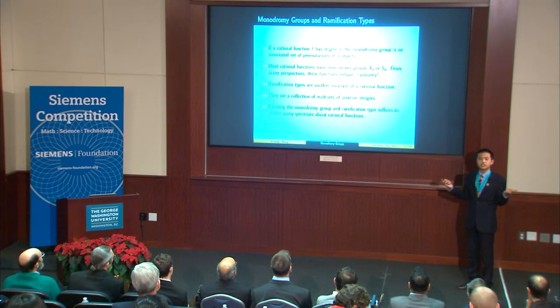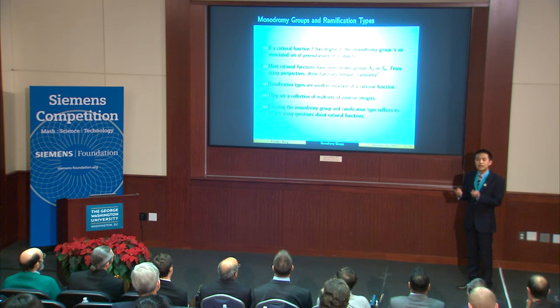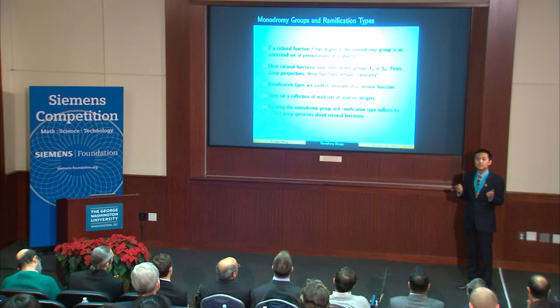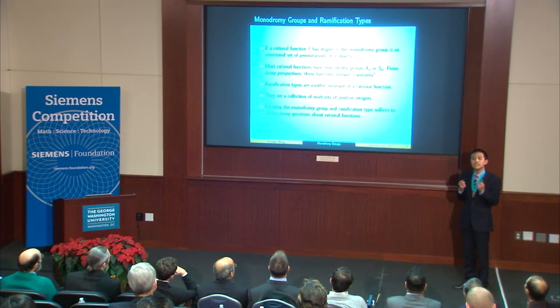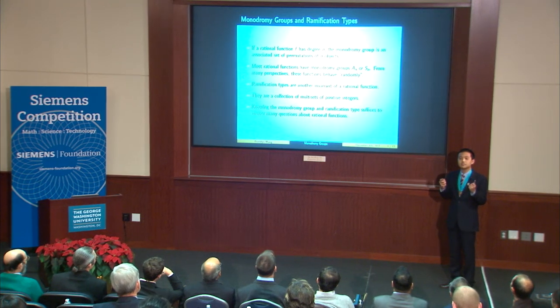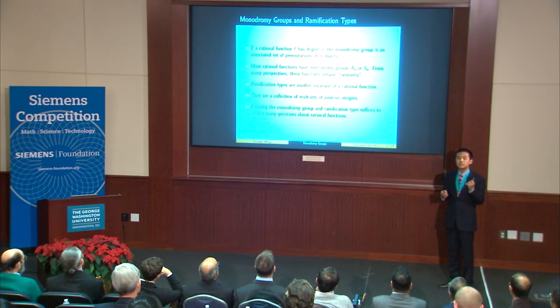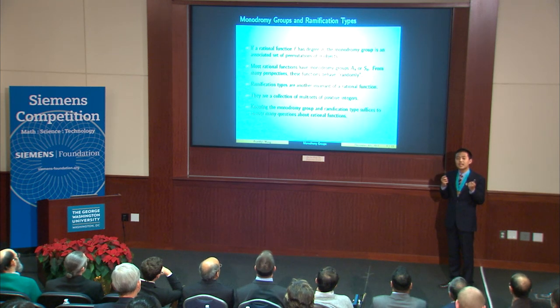How do we classify rational functions? We use their monodromy groups and their ramification types. If rational function f has degree n, then the monodromy group is an associated set of permutations on n objects. Most rational functions have monodromy groups equal to A_n or S_n. In many ways, these functions behave randomly, meaning that we can take them to act like the average rational function. Another invariant of rational functions is their ramification type. These are collections of multi-sets of positive integers such that the sum of the elements in each multi-set is equal to n.